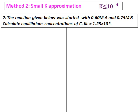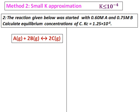We will do method 2, the small K approximation. When K is less than or equal to 10 to the power of negative 4, we use this method. The reaction given was started with 0.60 molar A and 0.75 molar B. Calculate the equilibrium concentrations of C. Kc is given, and its value is 10 to the power of negative 8 — much less than 10 to the power of negative 4.